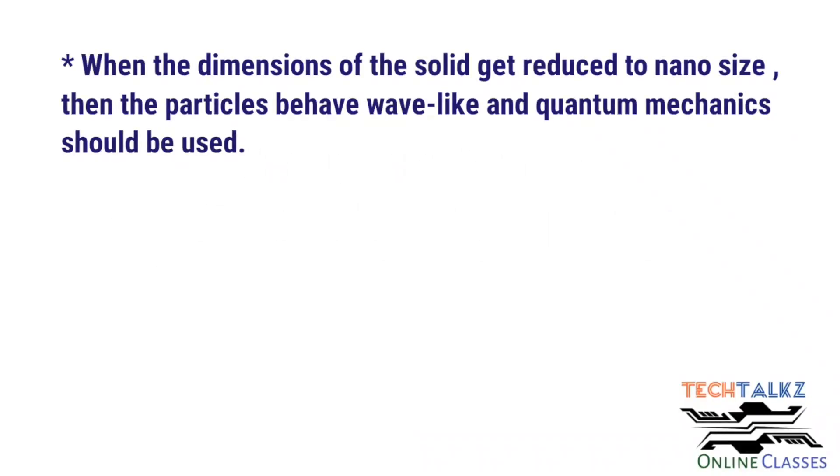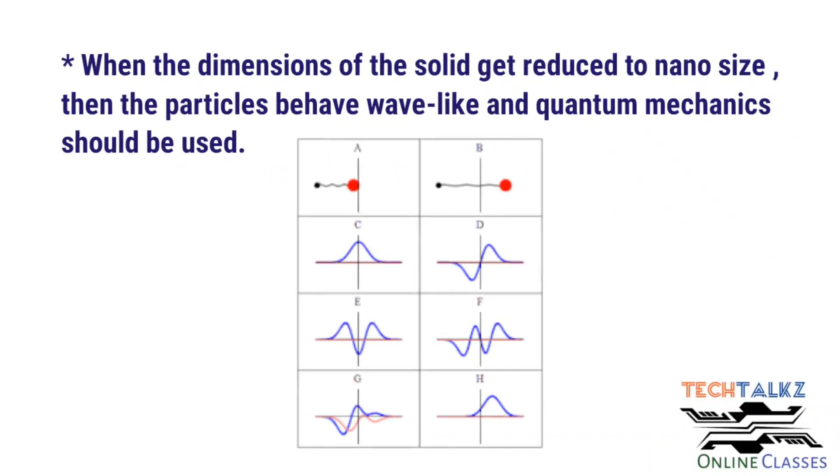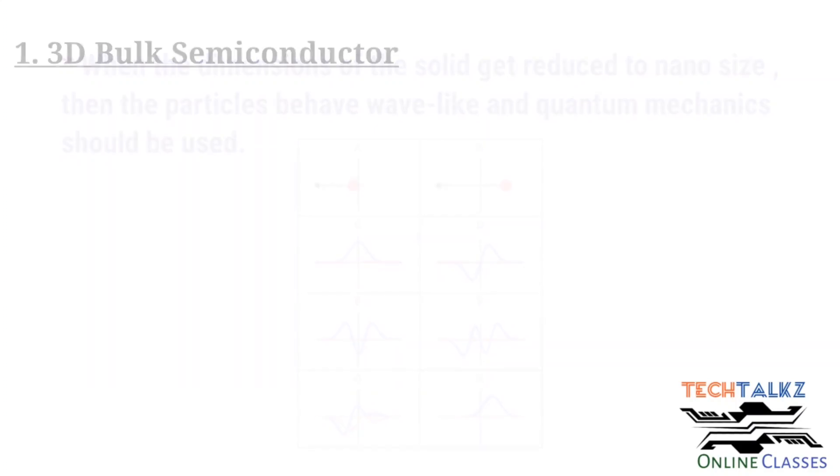Then the particles, here the electrons, they will have wave-like characteristics. And here quantum mechanics should be used to express their characteristics. Please note, in low dimensional structures, the classical physics laws cannot define the normal characteristics of these nanomaterials. It is very important.